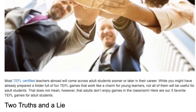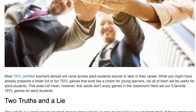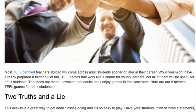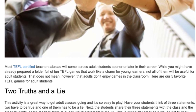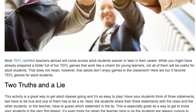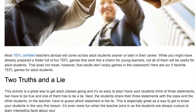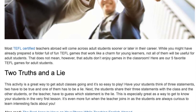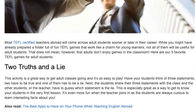Two Truths and a Lie. This activity is a great way to get adult classes going and is very easy to play. Have your students think of three statements: two have to be true and one has to be a lie. The students share their three statements with the class and the other students have to guess which statement is the lie. This is especially great as a way to get to know your students in the very first lesson, and it's even more fun when the teacher joins in.